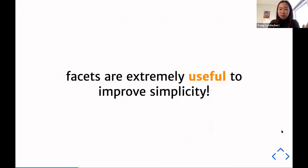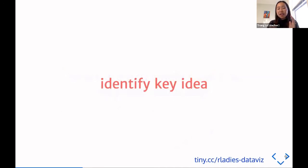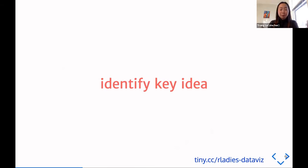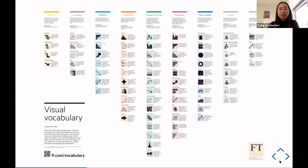The next principle is to identify the key idea. Sometimes we have a lot of things in our data and we first want to explore it — we don't really know what our story or punchline is yet, and that's fine. However, if you're going to show that to someone else, you do need a message behind it. Once you identify your key idea, find the best way to communicate it. Come back to your chart and think: does it really communicate that well?